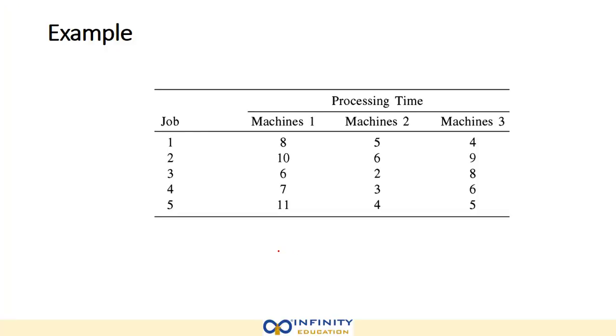Here we have taken the example. We have five jobs and their processing time on machine one, machine two, and machine three. All the assumptions we took in the previous part one video will apply here also.